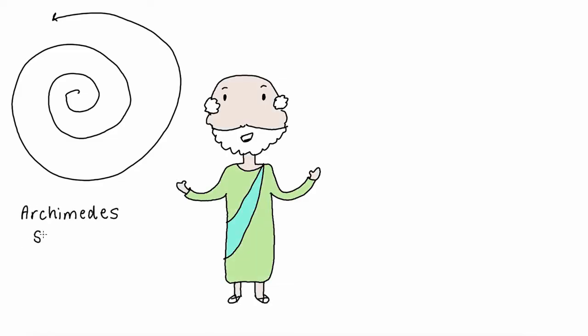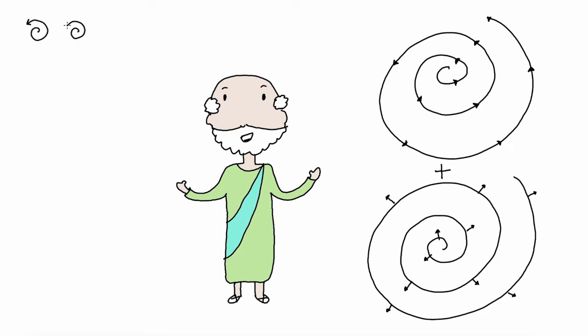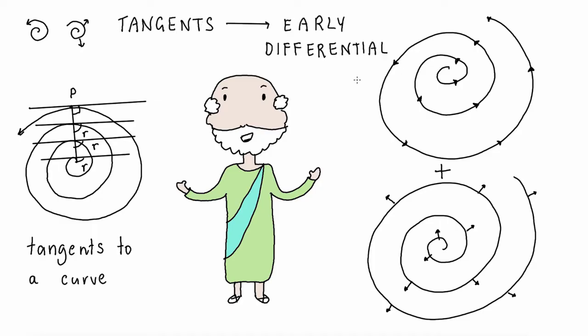He separated the point's motion into two components: one radial and one circular motion. He added the two motions together and by doing this was able to find the tangent to a curve.